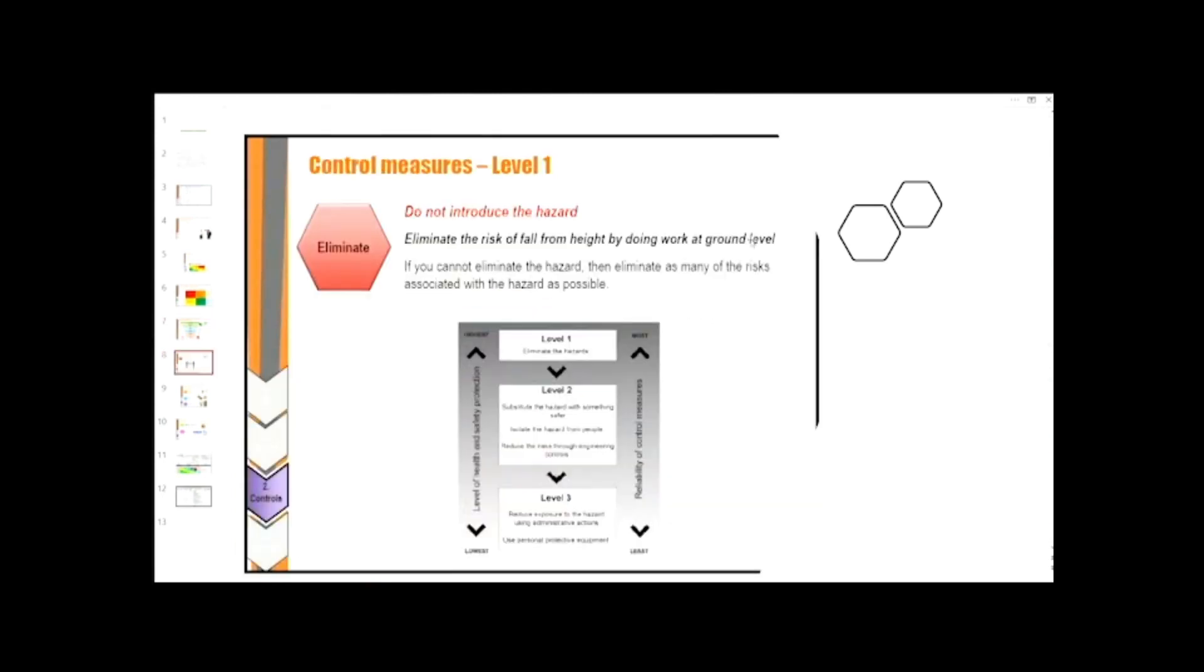The level one control measure is to eliminate. Do not introduce the hazard to eliminate the risk. For example, eliminating the risk of a fall from height by doing work at ground level. If you cannot eliminate the hazard, then eliminate as many of the risks associated with the hazard as possible.